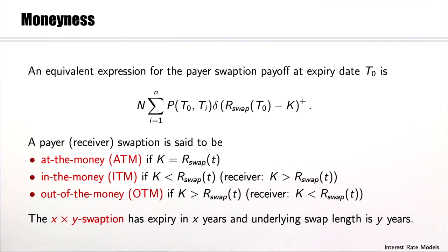This leads to the following convention. We say a payer swaption is at the money if the strike rate equals the prevailing forward swap rate. The payer swaption is in the money if the strike rate is smaller than this forward swap rate, and out of the money if the strike rate is larger. For the receiver swaption it is the converse.